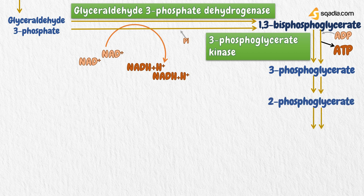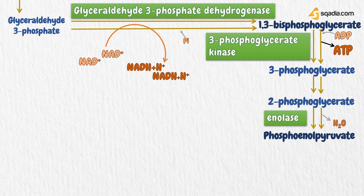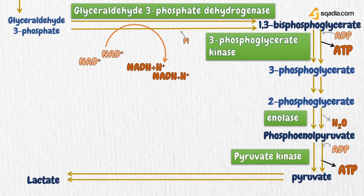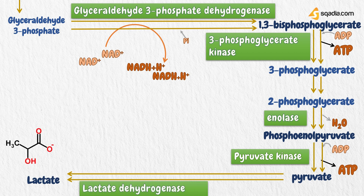3-phosphoglycerate then changes into 2-phosphoglycerate and further into phosphoenolpyruvate. This phosphoenolpyruvate releases a phosphate molecule, producing ATP from ADP and converting into pyruvate — a reaction catalyzed by pyruvate kinase. The pyruvate then forms lactate as the final product of this pathway, with the help of lactate dehydrogenase, converting NADH with a hydrogen ion back into NAD+.